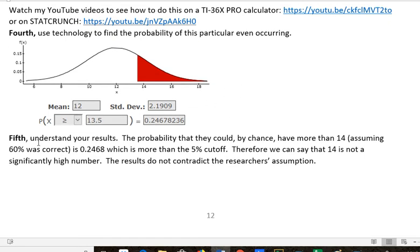The fifth step is to understand your results. The probability that they could, by chance, have more than 14, assuming that 60% success was correct, is 0.2468, about 25%, which is higher than that 5% cutoff. Since our probability is higher than 5%, we can say that 14 is not a significantly high number because it can happen by chance. The results do not contradict the researcher's assumption. All right, have a fantastic day.